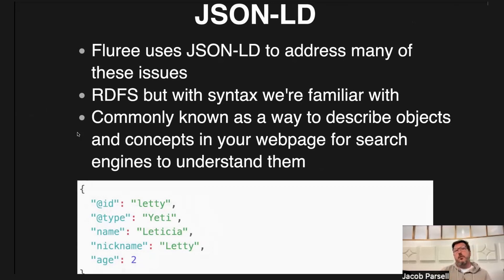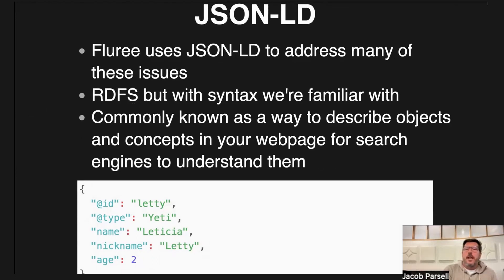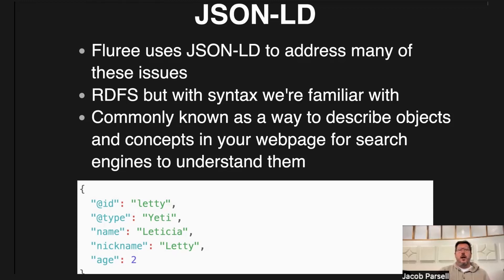JSON-LD is a superset of RDFS — or RDFS represented in JSON is another way to think of it. These are triple stores. The nice thing about JSON-LD versus RDFS is that it's in a syntax I'm already familiar with — it's a superset of JSON. In Flurry, you can actually just transact plain JSON: you could leave off the @ID and @type and still get an entity with name, nickname, and age. But the more you decorate that JSON with things like @ID with an IRI or @type with the class of the entity, the more powerful that gets as you start to expand your database.